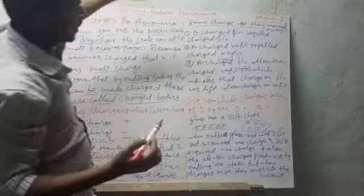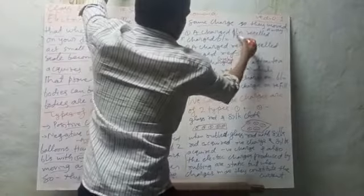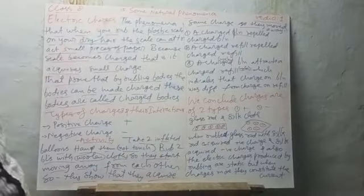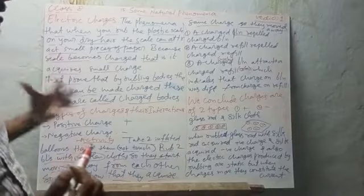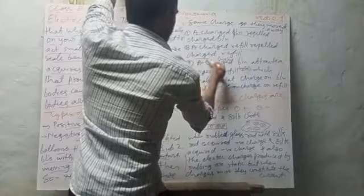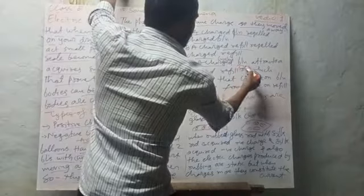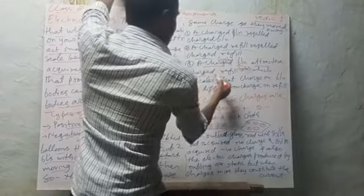Activity: charged balloons repel each other. Second, take two charged pen refills and rub them with a woolen cloth — those refills also repel each other. So a charged balloon repels another charged balloon, and two charged refills also repel each other.